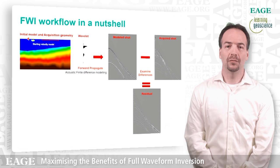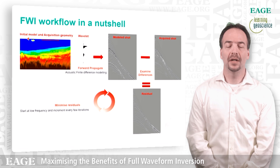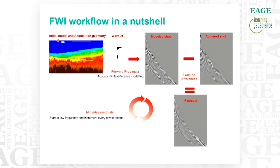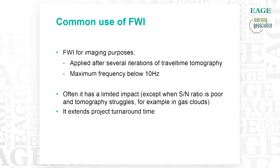We do that in an iterative manner, starting at a low frequency and then iterating and increasing the frequency after a few iterations. What we're trying to do is to recover a velocity that is at a much higher frequency, and possibly the simulated shot will then resemble much more the shot that is acquired in the field.